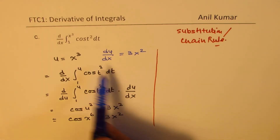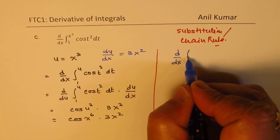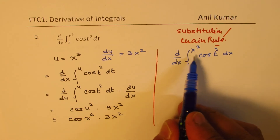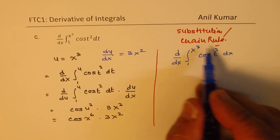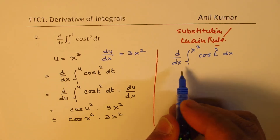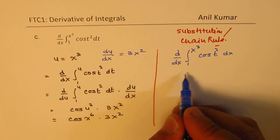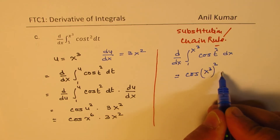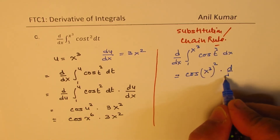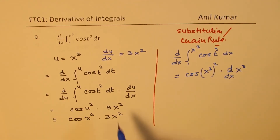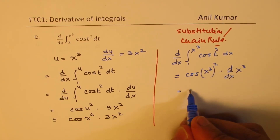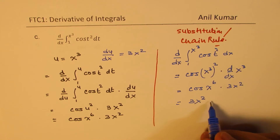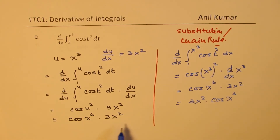Alternately, we can do this directly. We write d dx of the integral from 1 to x³ of cos(t²) dt, and evaluate the integrand at x cubed: cos of (x³)², which is cos of x⁶, times the derivative of x cubed, which is 3x squared. Rearranging, we get 3x² times cos(x⁶). So substitution followed by chain rule gives us the same result either way.